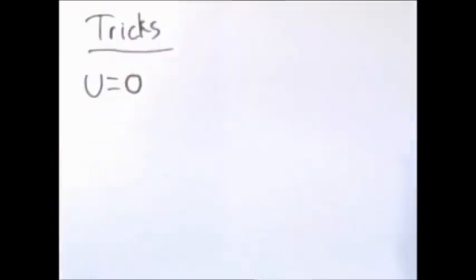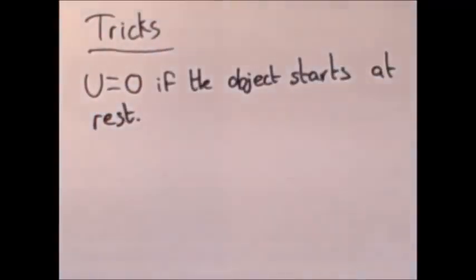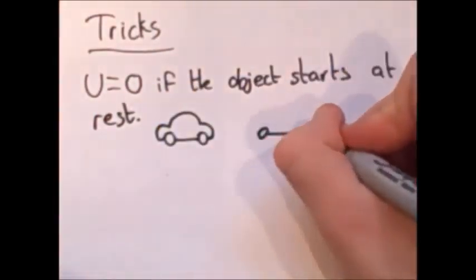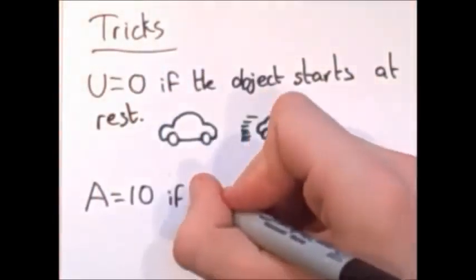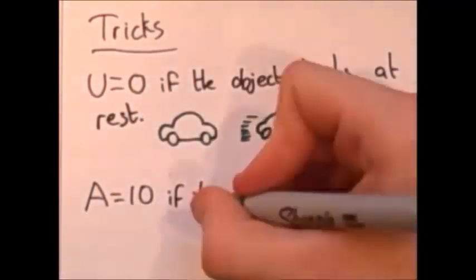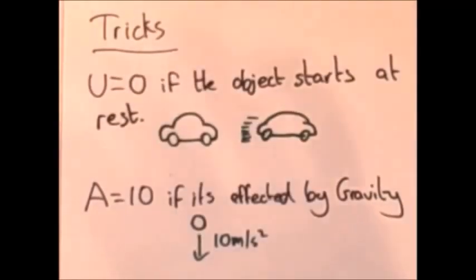Easy? There are some simple tricks you need to remember. If an object starts at rest, then U is always 0. And if the object is moving due to gravity, acceleration is always 10, unless said otherwise. For example, they could be talking about being on Mars or on the Moon.